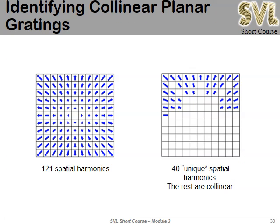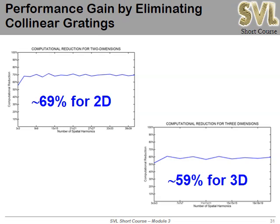Visualizing this: an 11×11 grid window contains 121 spatial harmonics. Sorting into families of parallel grating vectors leaves only 40 families with unique directions — reducing from 121 to 40, a significant savings. For two-dimensional lattices, this yields about a 70% reduction in the number of numerical solves. For 3D lattices it's about 60%, still very significant and worth implementing.